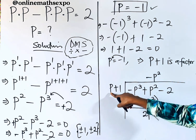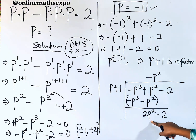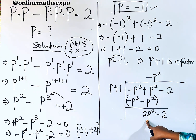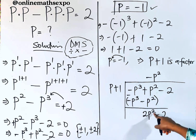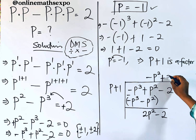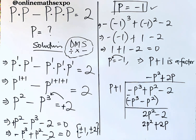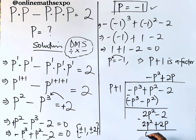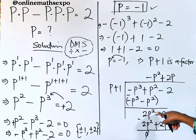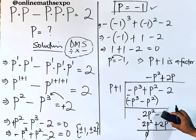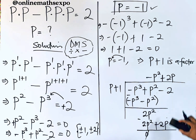Divide the first term of the divisor, p, into 2p²: that gives +2p. Multiply 2p by the divisor (p + 1): we get 2p² and 2p. Subtract: 2p² minus 2p² gives zero. Then we need to handle the p terms.